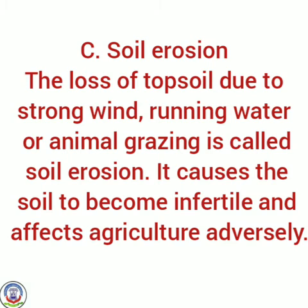C — soil erosion. The loss of top soil due to strong wind, running water or animal grazing is called soil erosion. यानि तेज हवाओं, बहते पानी या जानवरों के चरने की वजह से soil की ऊपर वाली layer का नुकसान होना soil erosion है। It causes the soil to become infertile and affects agriculture adversely — जिसमें बहुत सारे nutrients होते हैं और उसकी वजह से agriculture यानि खेती बाड़ी पर भी effect पड़ता है।